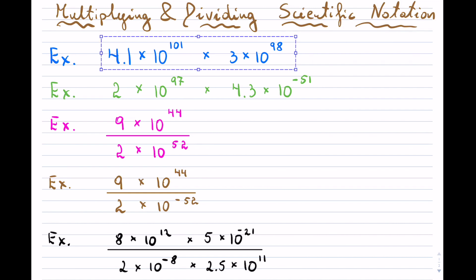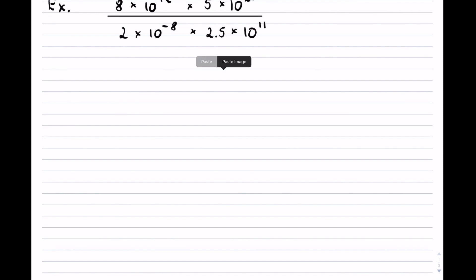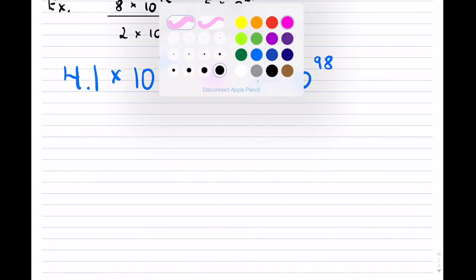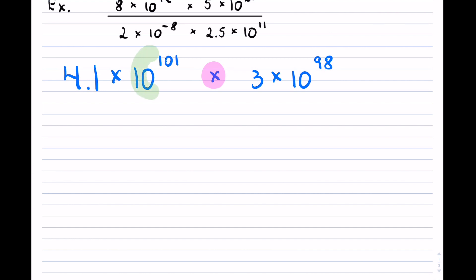Without using a calculator, let's take a look at the first one, that's our first example here. Now we are multiplying two numbers that are in scientific notation. When you multiply two numbers in scientific notation, the one key aspect that you have to know about is that your base 10 to the power with exponents that have the same base, in this case it's 10, then those exponents when you are multiplying are simply added up together.